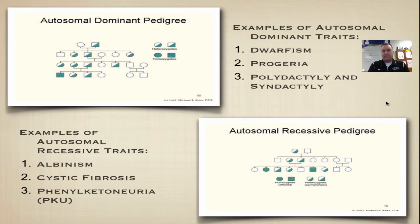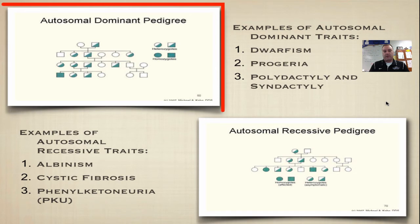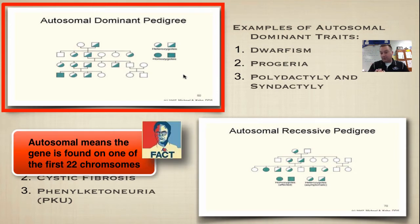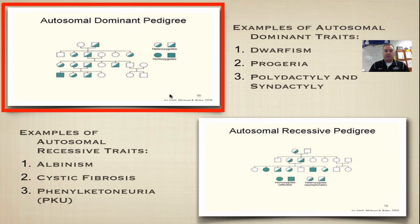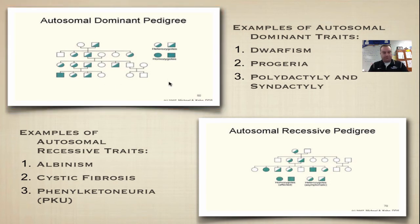The second thing we dealt with was pedigrees. Pedigrees show how a Mendelian trait is passed down through multiple generations within a family. Remember, squares are males and circles are females. Up here at the top we've got a dominant allele — autosomal dominant — which means it's on one of the first 22 chromosomes and will be inherited at the same rate in both males and females. Since it's dominant, you only need one allele. Anybody who is fully shaded in, or heterozygous, is going to show the trait. In a dominant allele, lots of individuals in each generation will show it.